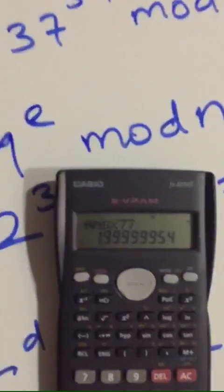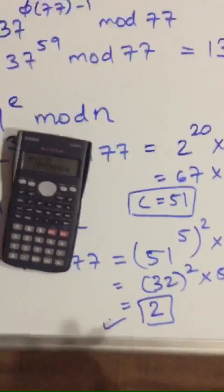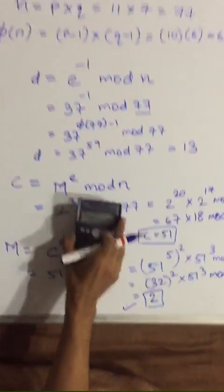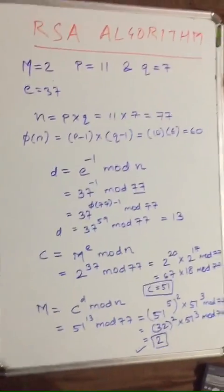As you can see, the ciphertext is converted back into the original message, confirming that the RSA algorithm is correct. Thank you.